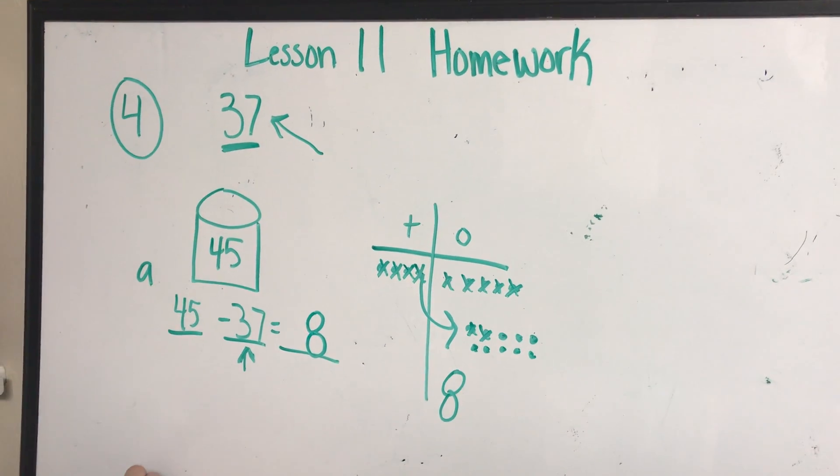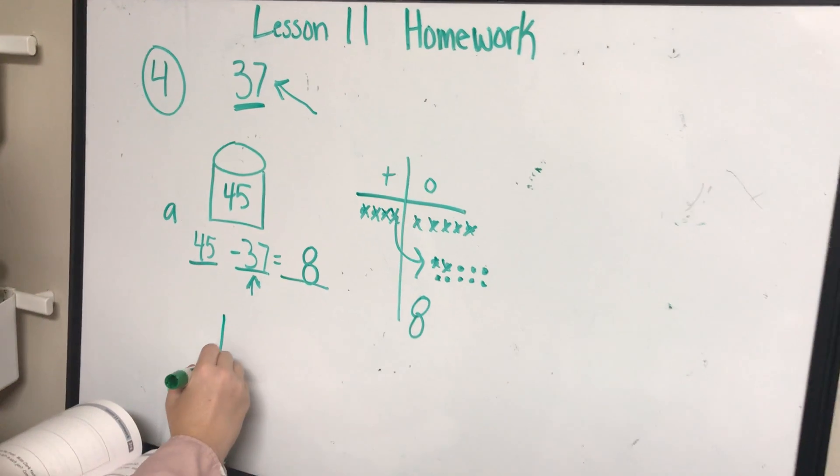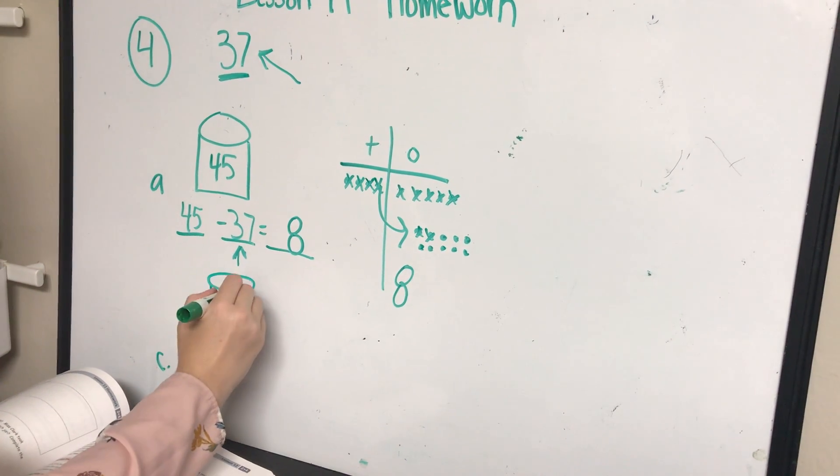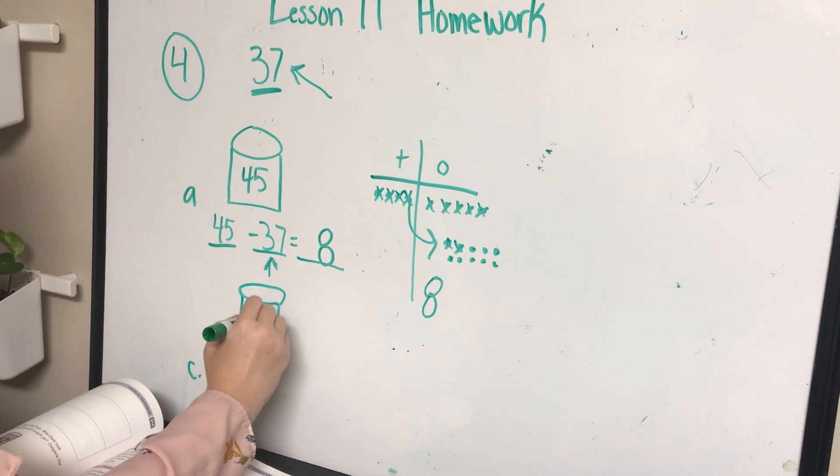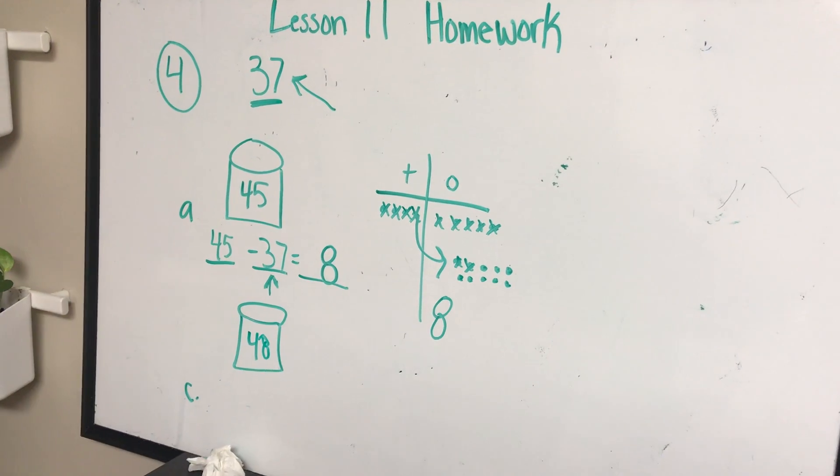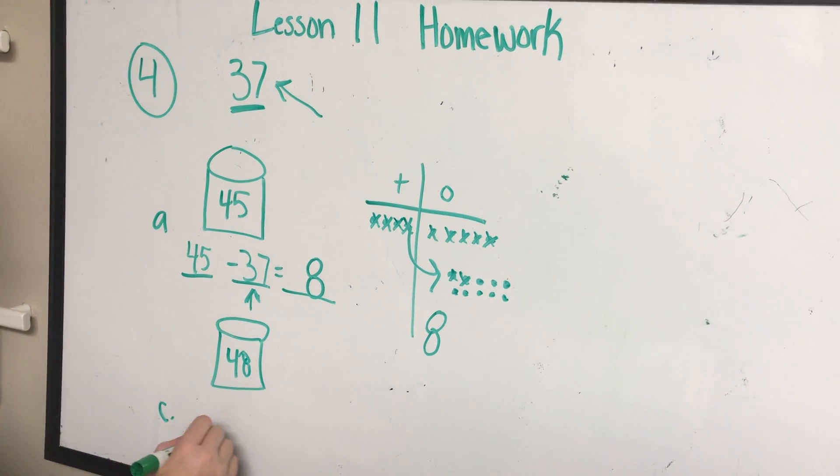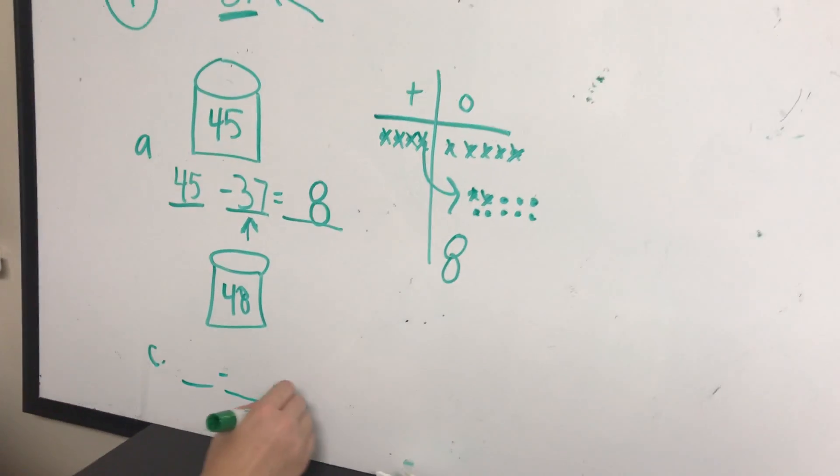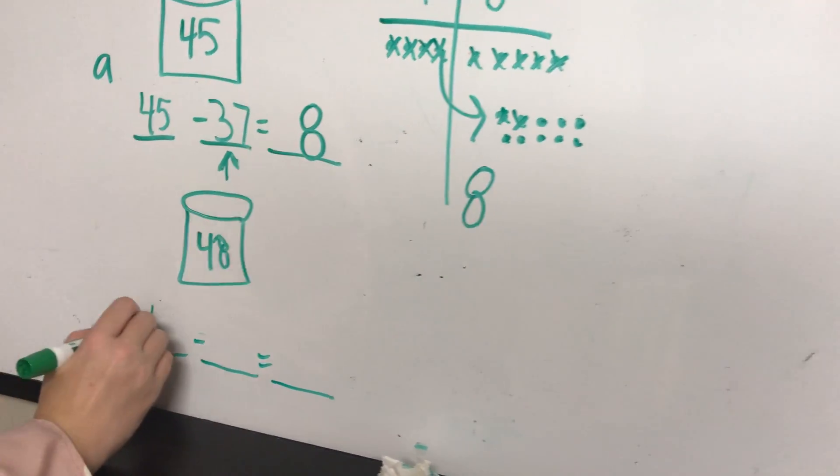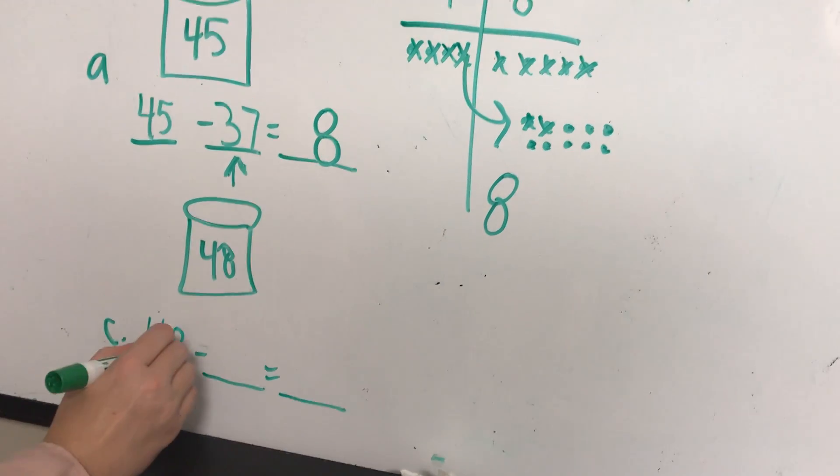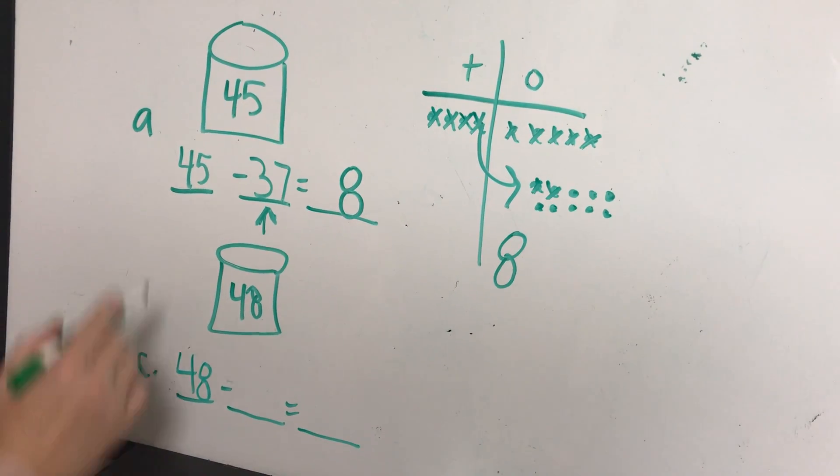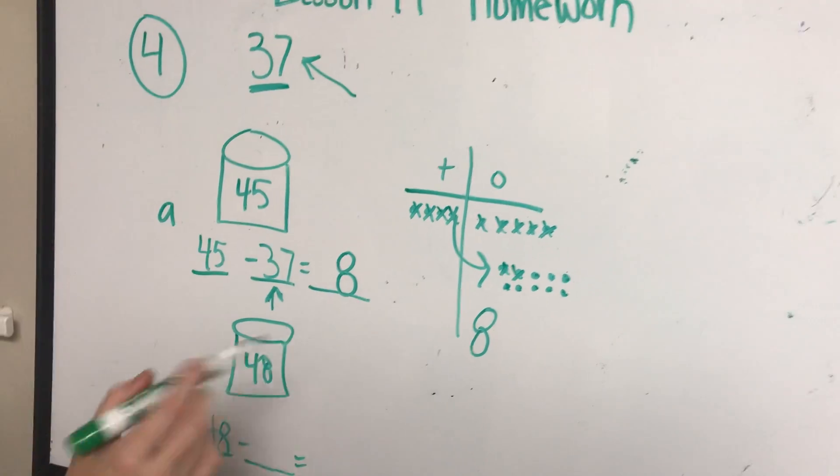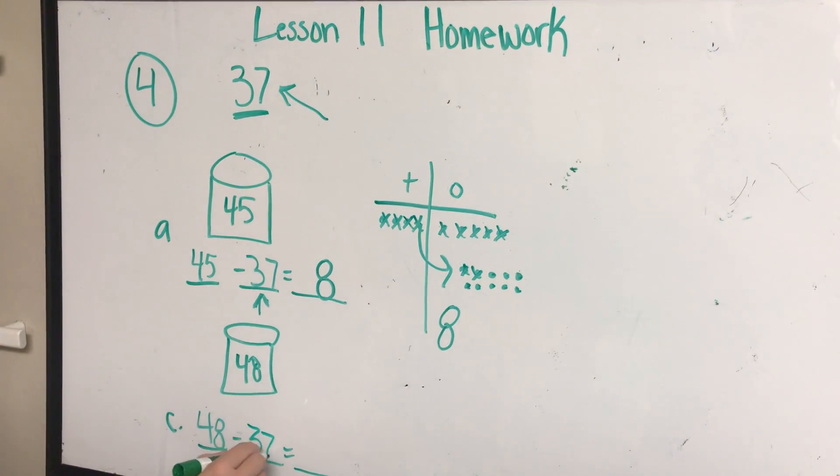Now, on C, we're going to skip down to C, the one right below A. You have your little jar of marbles. It says 48 on it. You have your three lines. Now, you know the first number is the number on the jar, so you can write it down. Miss Clark subtracted 37 from all of them, so we're going to make 37 my second number.